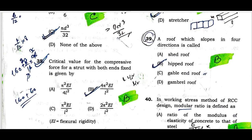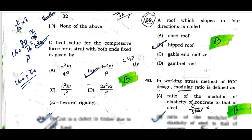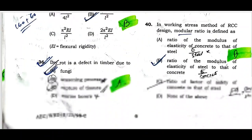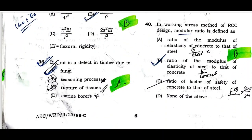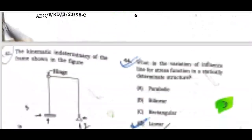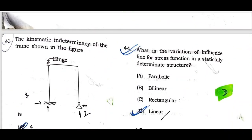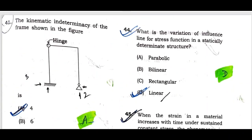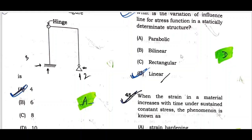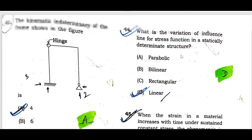Question number thirty-nine: A roof which slopes in four directions is called a hipped roof. Question number forty: In the working stress method of RCC design, modular ratio is defined as the ratio of the modulus of elasticity of steel to that of concrete. Question number forty-one: The kinematic indeterminacy of the frame shown is option A — that is four.